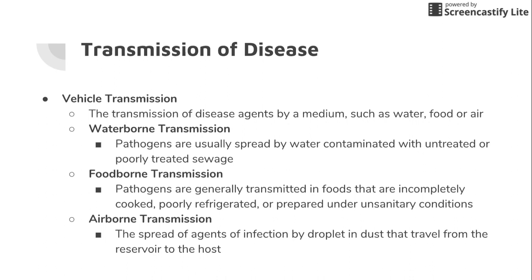A disease transmitted by the waterborne route would be cholera, which is a horrible intestinal disease. Pathogens get inside the water, you drink it, now you have the disease. Foodborne transmission involves things that aren't completely cooked, not refrigerated well, or not prepared properly. Certain meats have to reach a specific internal temperature when cooked to kill all the bacteria within them. If you don't cook them to that temperature, you risk getting sick. Examples include food poisoning and tapeworm infestation.